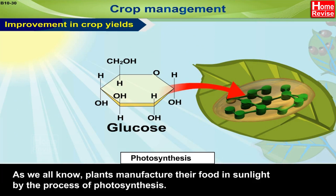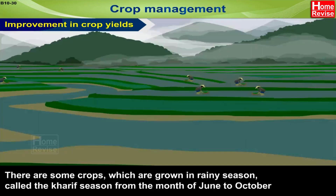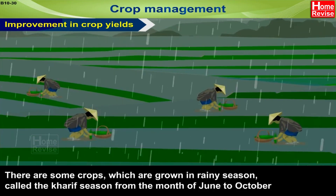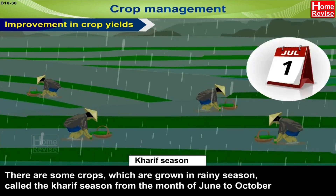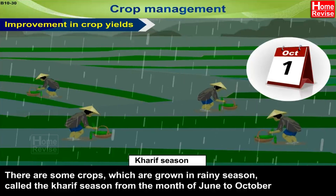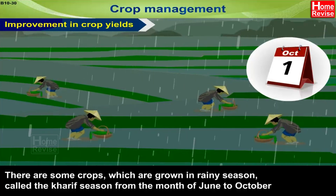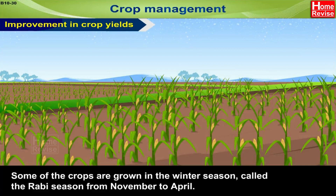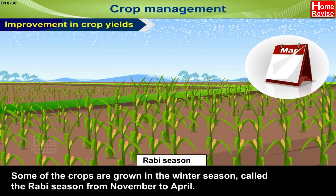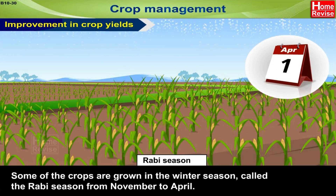There are some crops which are grown in the rainy season, called the Kharif season, from the month of June to October. Some crops are grown in the winter season, called the Rabi season, from November to April.